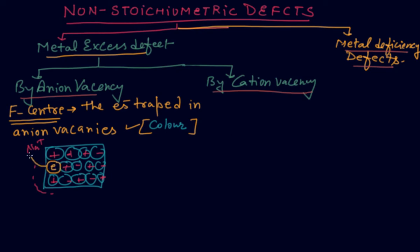Suppose that this anion will be missed and here the electron will come in this place. That is called F-center, which means when NaCl is heated in the sodium vapor, then F-center is created and this is a metal excess defect.